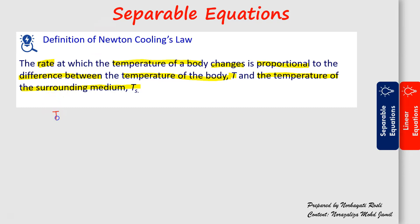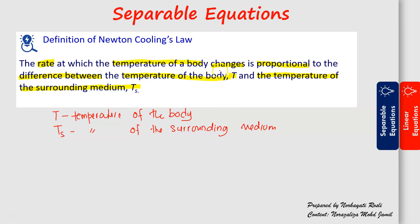Here, T is the temperature of the body and Ts is the temperature of the surrounding medium. The rate at which the temperature of the body changes means the rate of change of T with respect to time — let's use notation small t. This rate is proportional to the difference between the temperature of the body T and the temperature of the surrounding.